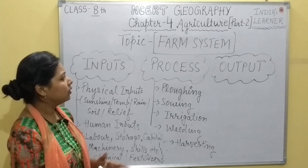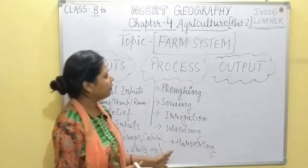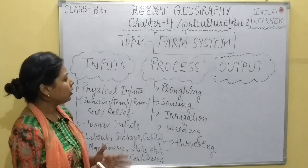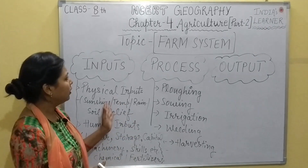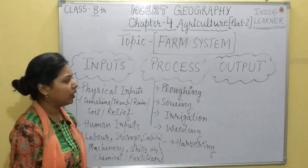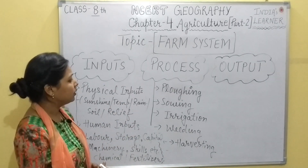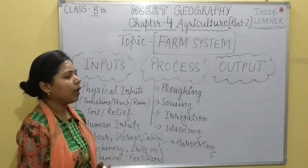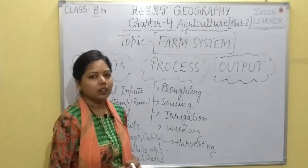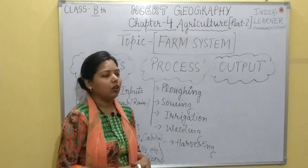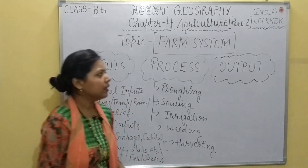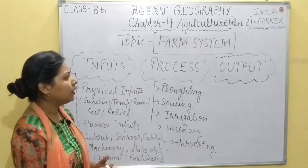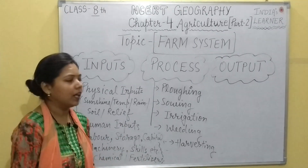After completing all these activities in the process with the inputs required in the different kinds of agriculture, we get outputs in different forms, depending on the agriculture or the raw materials or the seeds that are used in the farming.